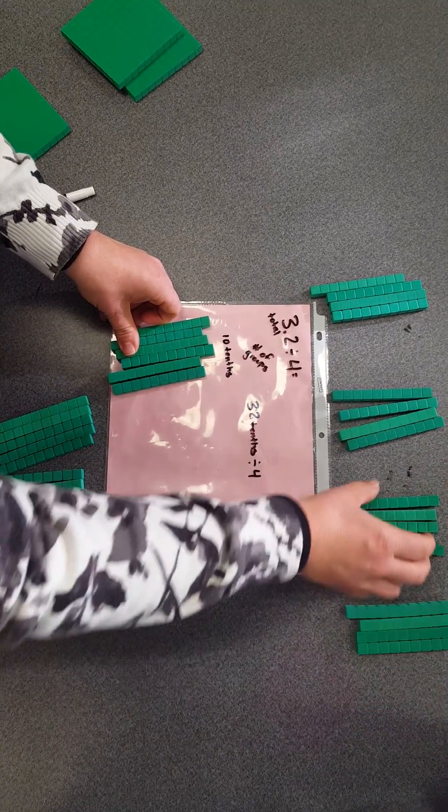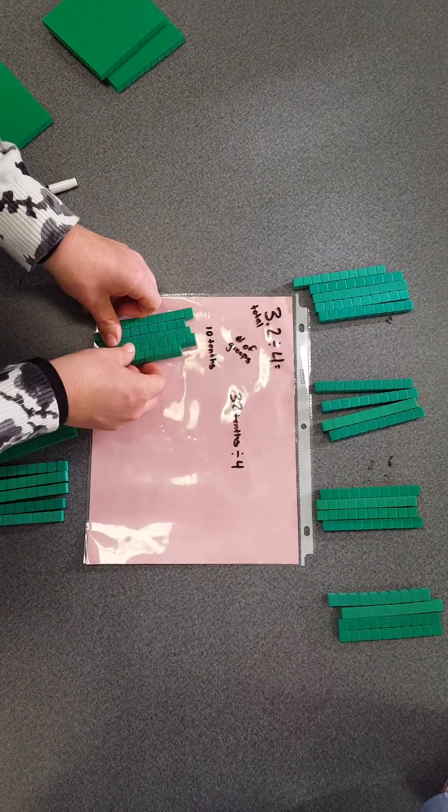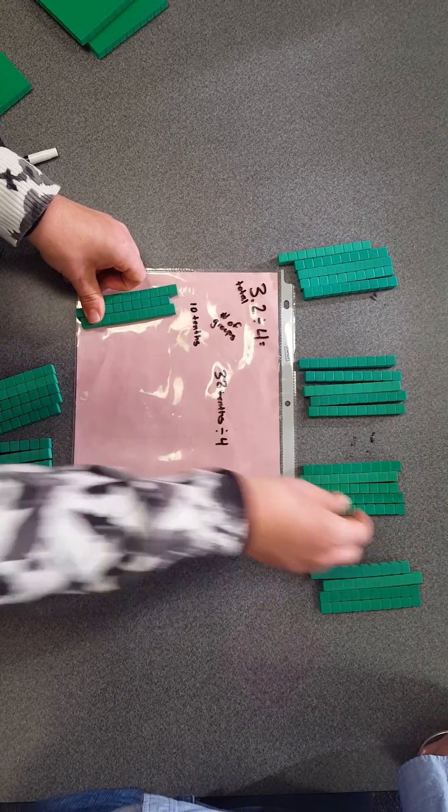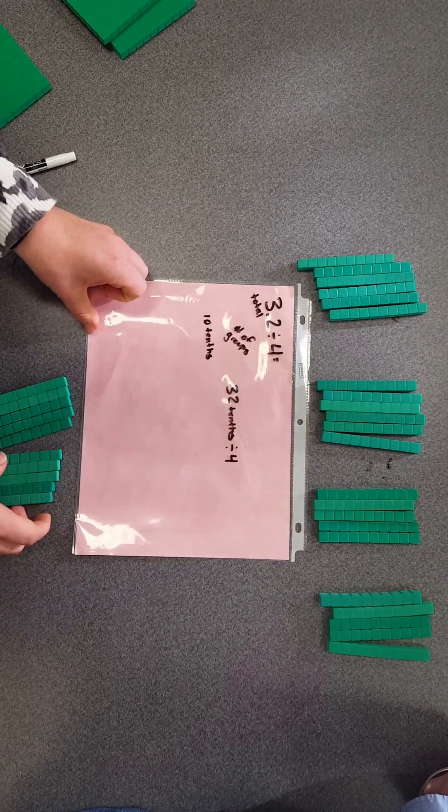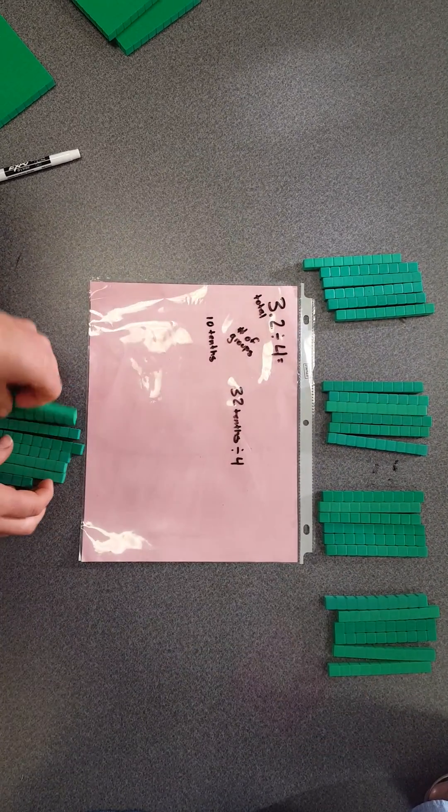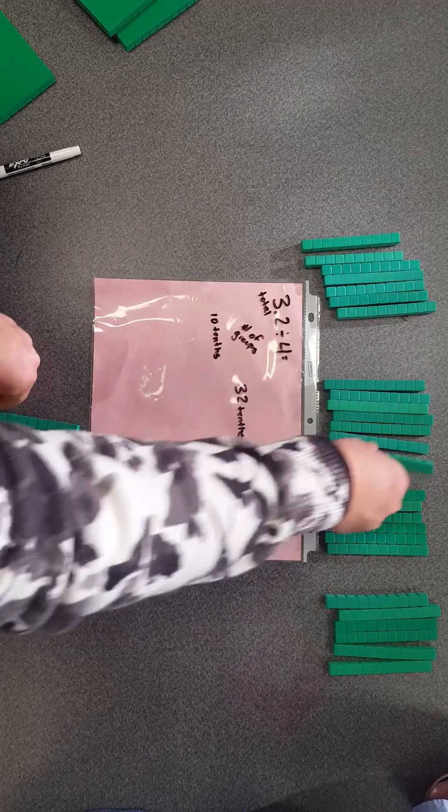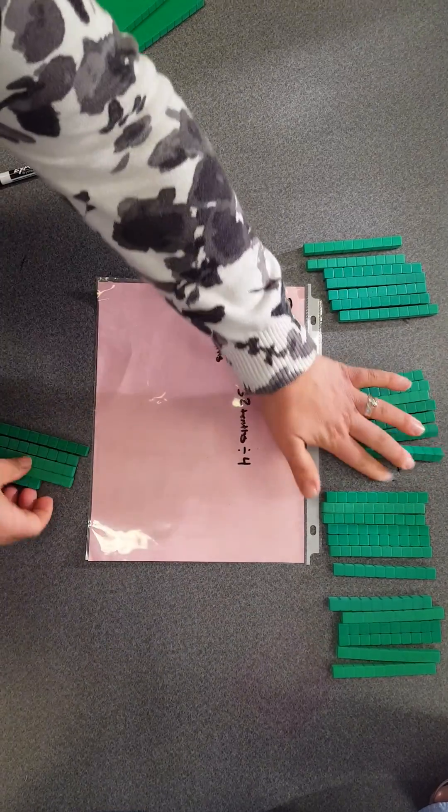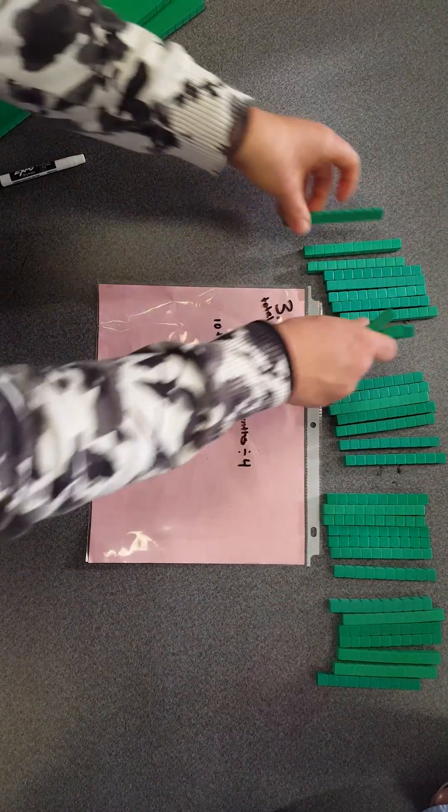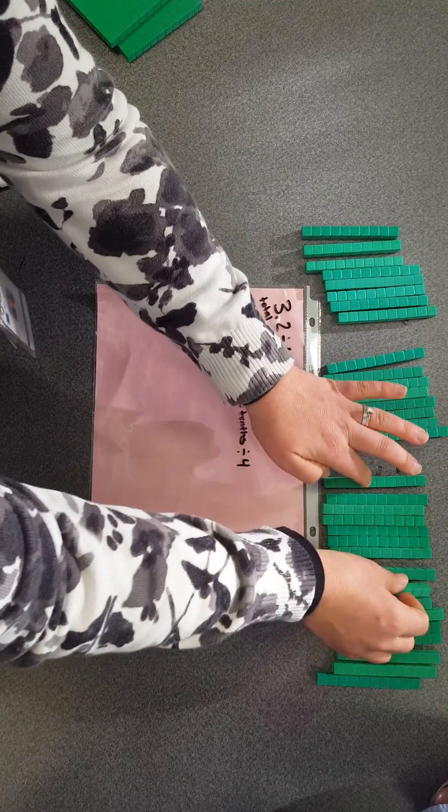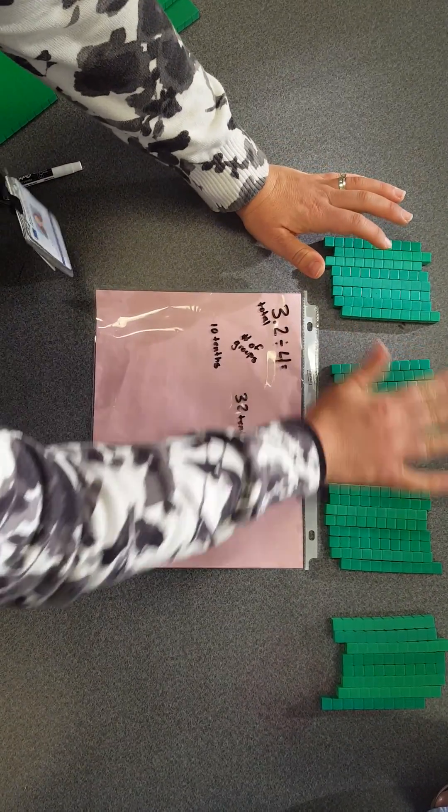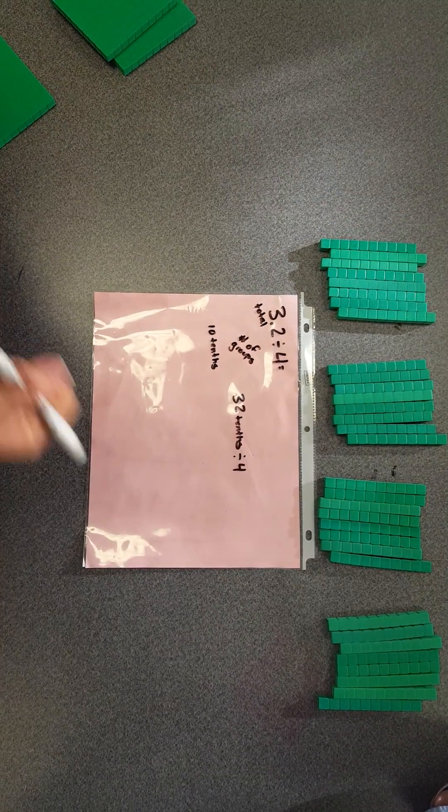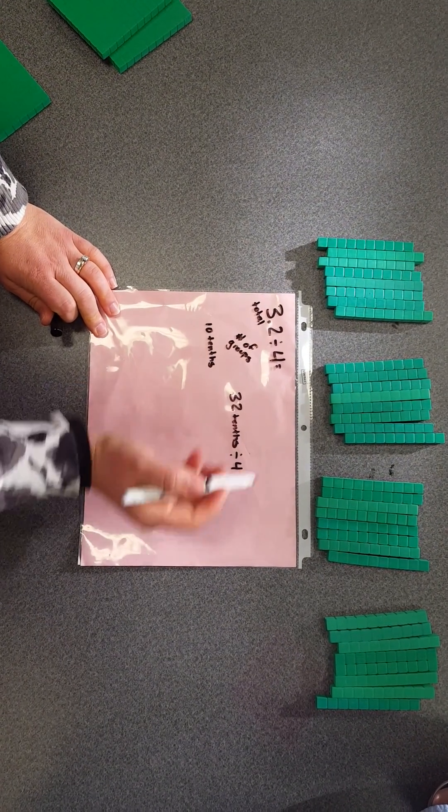Noticing that I chose numbers that equally divide into 4. I did that on purpose when choosing this problem, because I always want to have at least one whole number, whether it's in my dividend, my divisor, or my quotient.